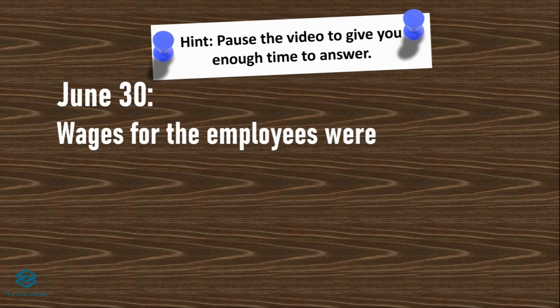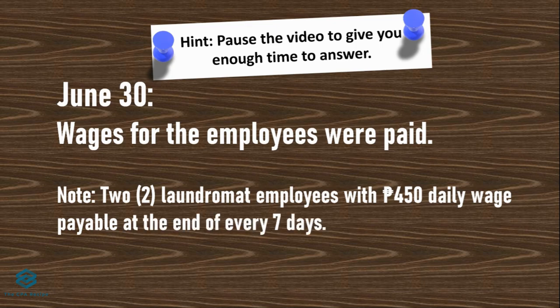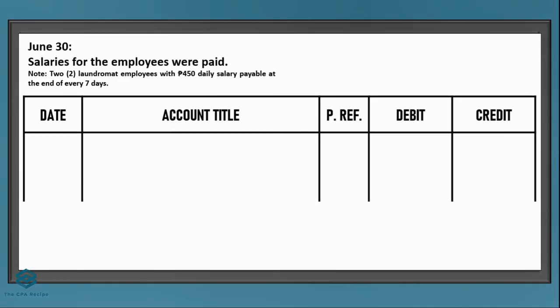On June 30, wages for the employees were paid again — same transaction as before, since wages are paid every 7 days. The entry is the same as June 23: debit salaries expense, credit cash for 6,300 pesos — just with a different date.